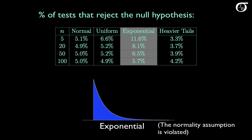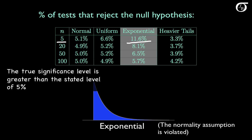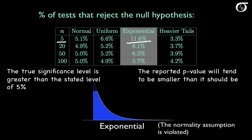Let's look at a different violation of the normality assumption. Suppose we're sampling from an exponential distribution, which has some right skewness — we can expect the t-procedures to perform worse. For a sample size of 5, we state a significance level of 5%, but in the simulation we actually rejected the null hypothesis 11.6% of the time. The true significance level is quite a bit greater than the stated 5%, and the reported p-value tends to be too small. We do see this effect start to go away as the sample size increases, with percentages getting closer and closer to 5%.